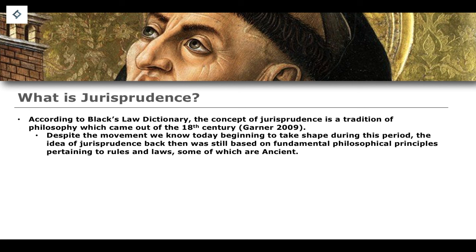Despite this, it should be noted that even though our modern understanding and the development of jurisprudence comes out of this period, the idea itself of jurisprudence — and some of the most fundamental philosophical principles pertaining to rules and laws — are actually far more ancient than that. The first of our major topics, natural law, comes out of the works of individuals such as Aristotle, and then into the Christianisation of academia and the intellectual movements, as we transition from ancient history into the early medieval period. So even though jurisprudence is an 18th century development, the theories themselves are far, far older.